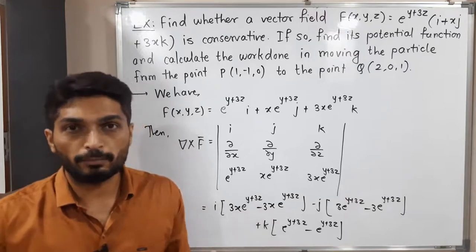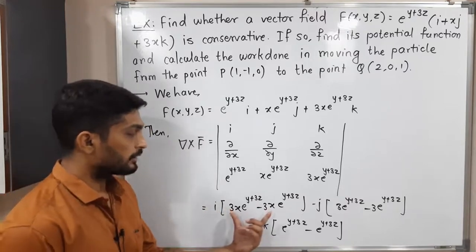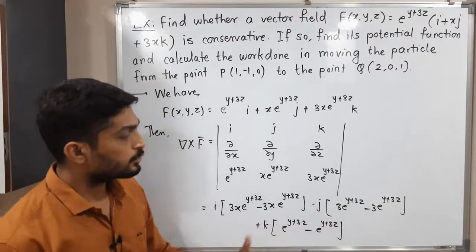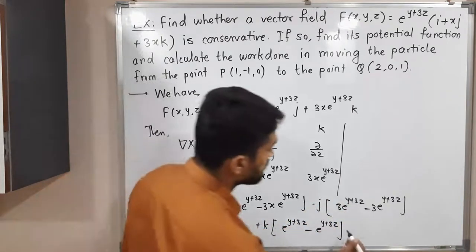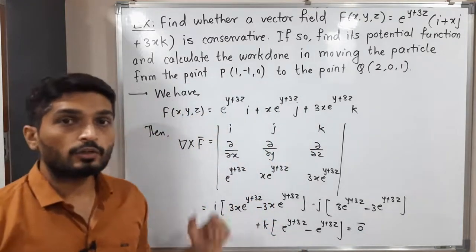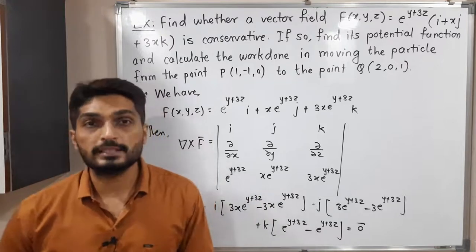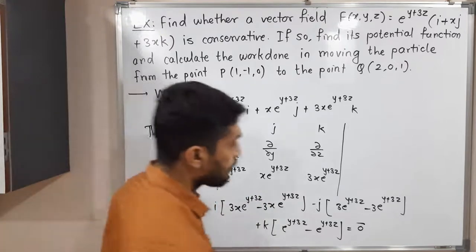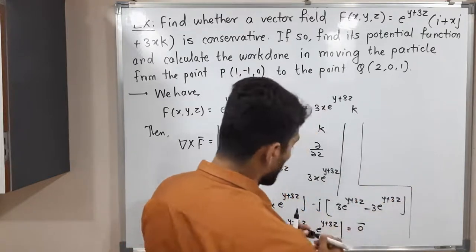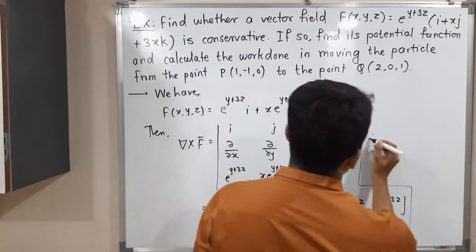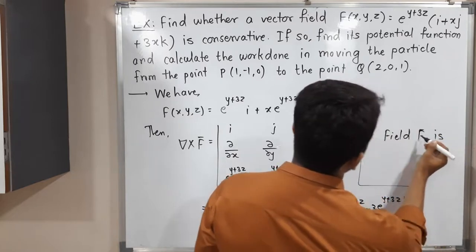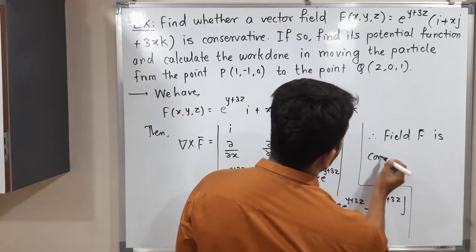In each and every bracket we have two terms with exactly opposite sign, so the value of all brackets will be zero. These two terms cancel, those two terms cancel, and the last two terms also cancel. So we get 0i + 0j + 0k, which means zero vector. Therefore, del cross F̄ = 0̄, meaning curl of F̄ is zero.